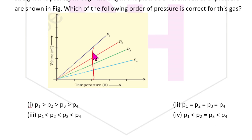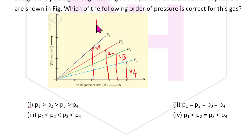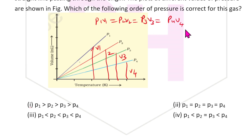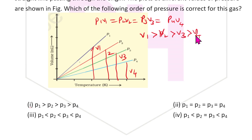Using the equation P₁V₁ = P₂V₂ = P₃V₃ = P₄V₄, and since the slopes differ at different pressures, we can identify that V₁ > V₂ > V₃ > V₄. Therefore P₁ < P₂ < P₃ < P₄.